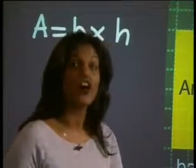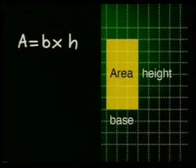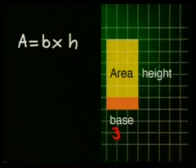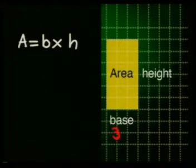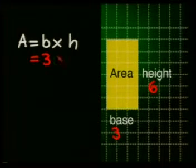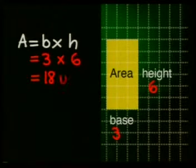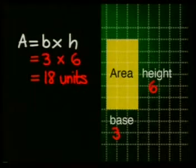Let's calculate the area of this rectangle. We said that the base was the number of squares in each row, so that was one, two, three — that means the base is three units. If we look at the height, we said the height was the number of rows: one, two, three, four, five, six units. So we can write: area is equal to three units multiplied by six units, which gives us 18 units squared.